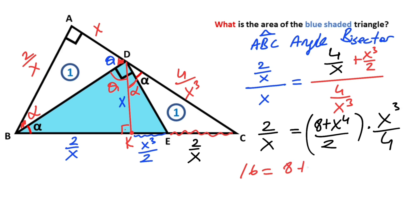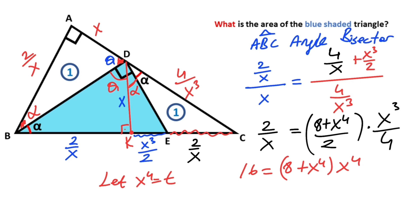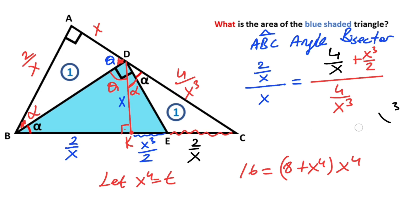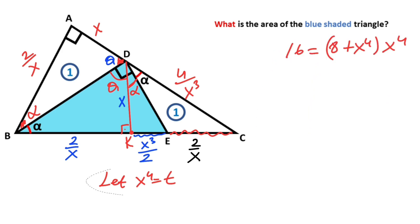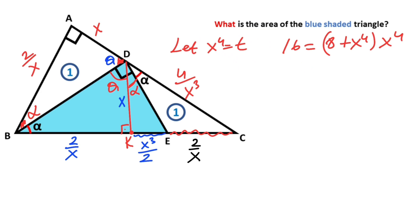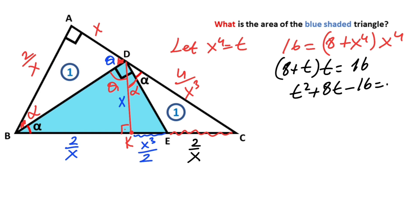So 16 equals (8 plus x⁴) times x⁴. Let's call x to the power of 4 as t. Therefore: (8 + t) times t equals 16, which gives us t squared plus 8t minus 16 equals 0.